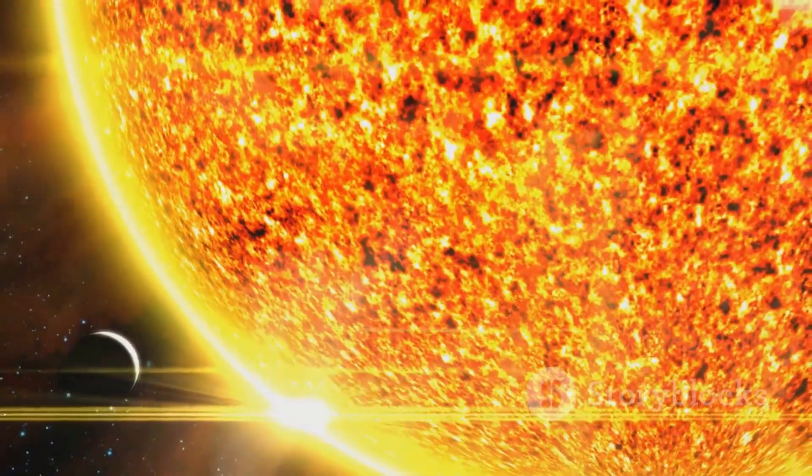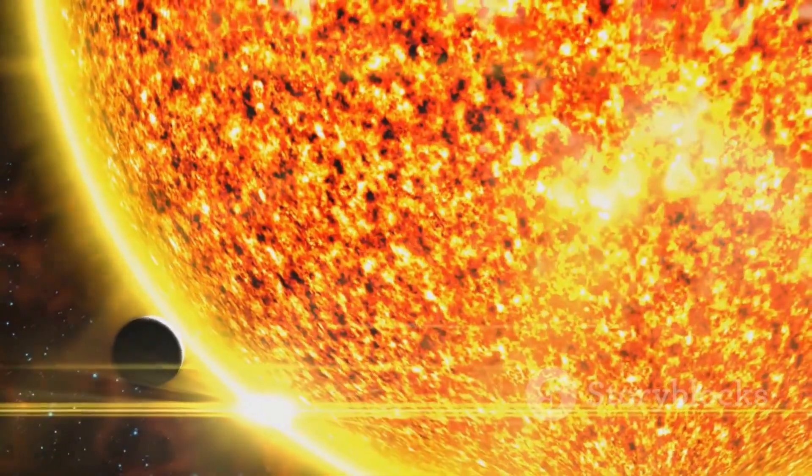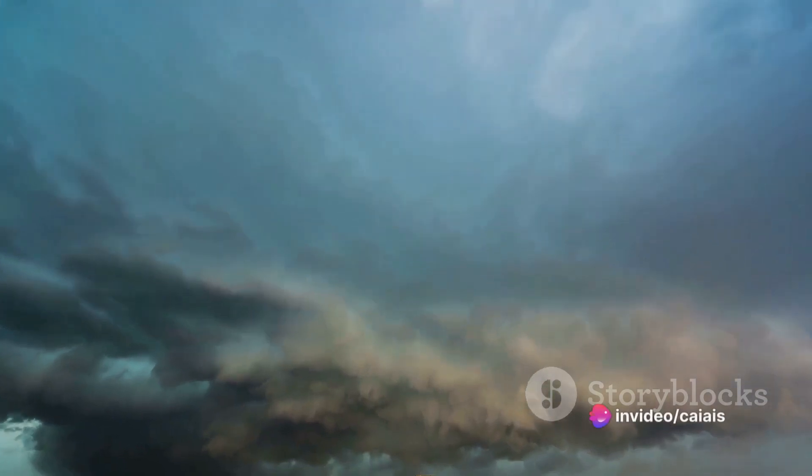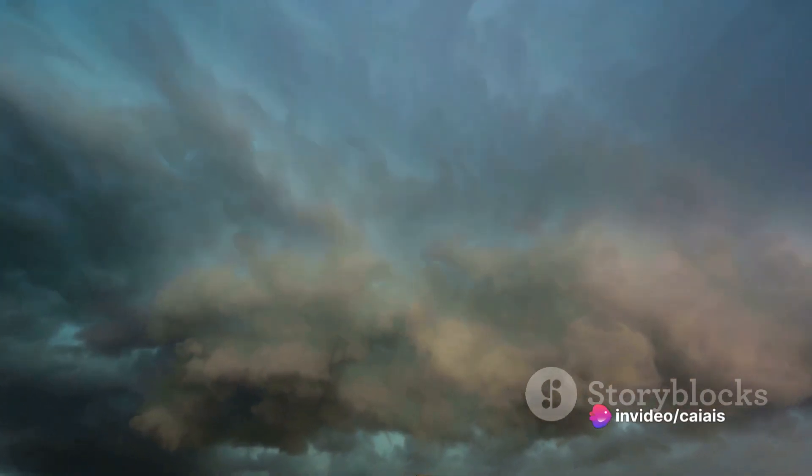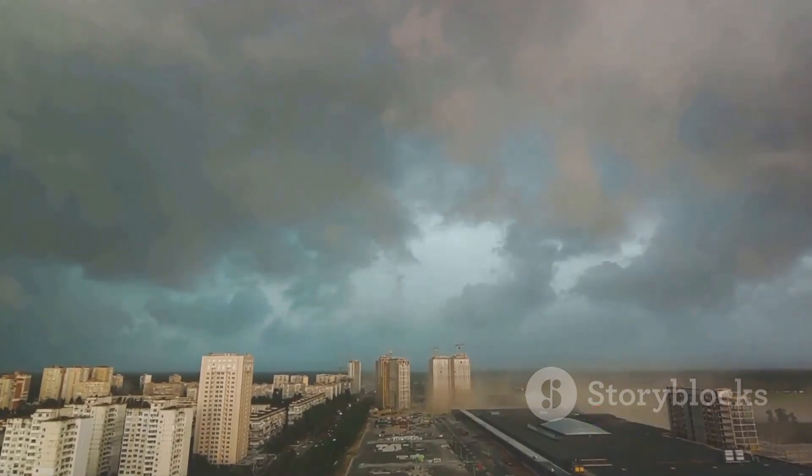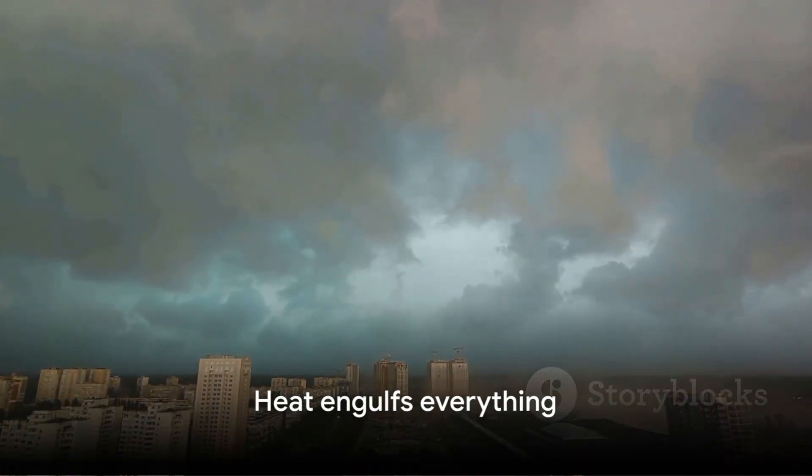The proximity of a neutron star would first bring about a scorching sun. Imagine the intense heat of a neutron star, hundreds of thousands of times hotter than our sun, roaring to life in our sky. This celestial furnace would superheat our atmosphere, causing catastrophic climatic changes on a scale we've never witnessed before.